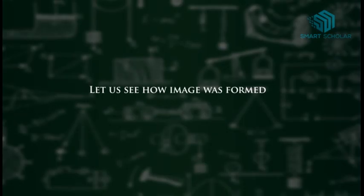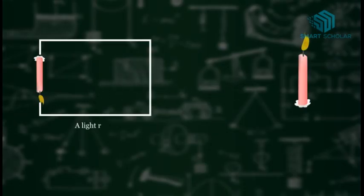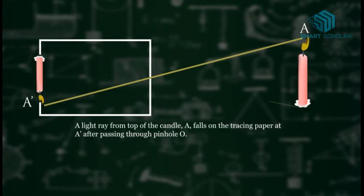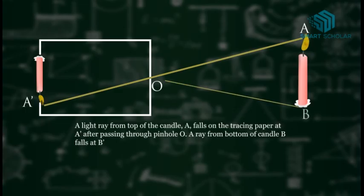Let us see how the image was formed. A light ray from top of candle A falls on the tracing paper at A1 after passing through the pinhole O. A ray from the bottom of candle B falls on B1.